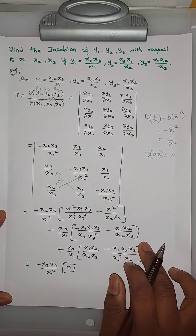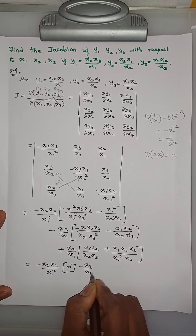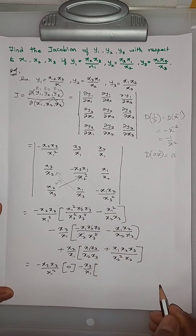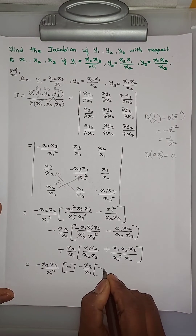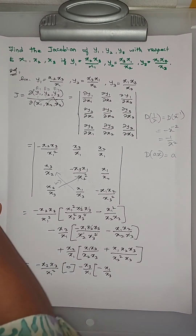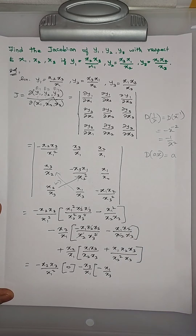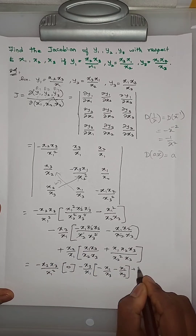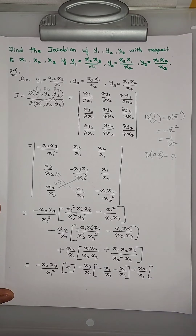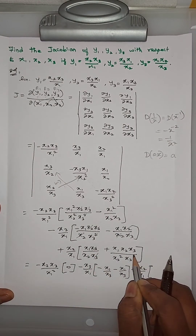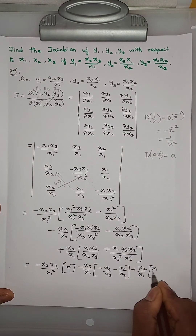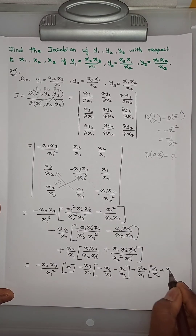For the second major term, the element is -x3/x1. After simplification, x2 cancels and one x3 cancels, leaving -x1/x3 in the numerator. The same term appears again with a minus sign. For the third element, plus x2/x1: x3 cancels and one x2 cancels, giving x1/x2. The same term appears again giving +x1/x2.